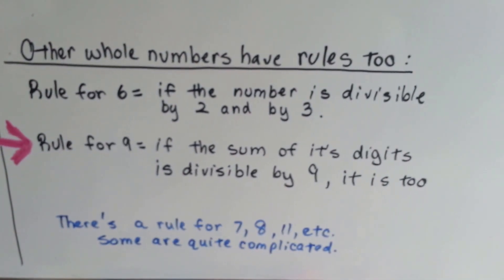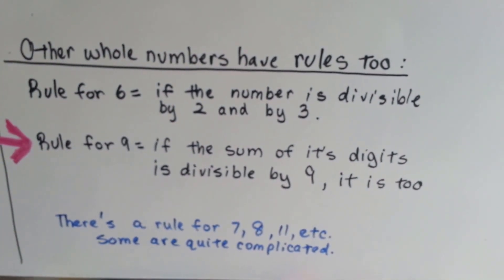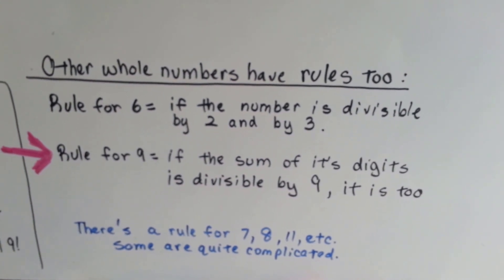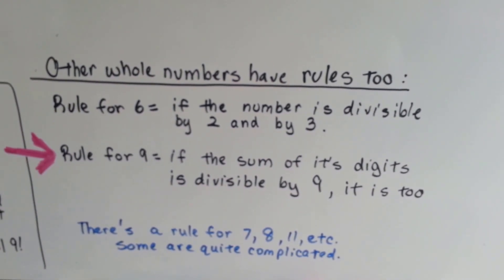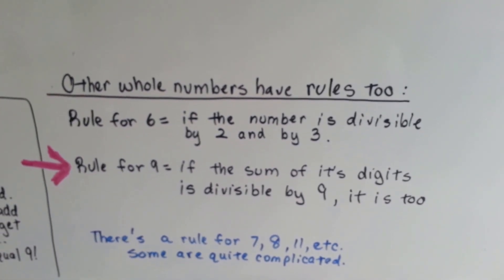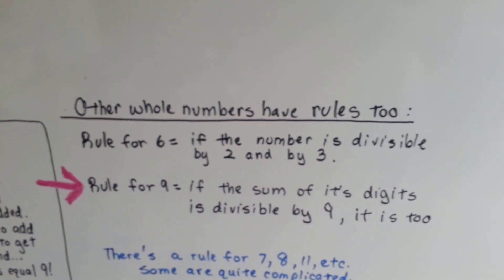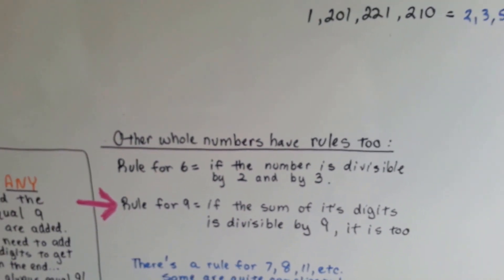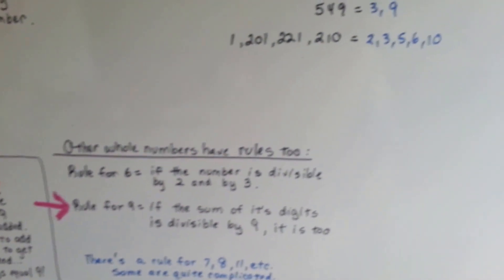So the rule for 9 is if the sum of its digits is divisible by 9, it is too. Now there's a rule for 7 and 8 and 11 and 17 and some other bigger numbers, but they get quite complicated. And we don't want to get into that right now. We just want to get into what's going to make your life easier when you're doing long division and when you're doing sixth grade math.